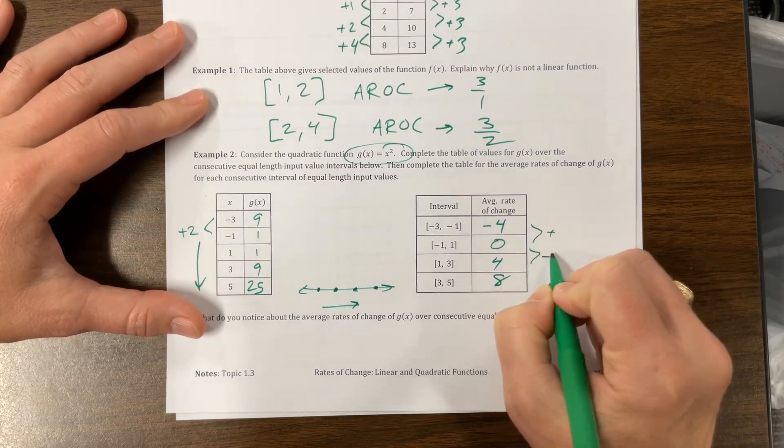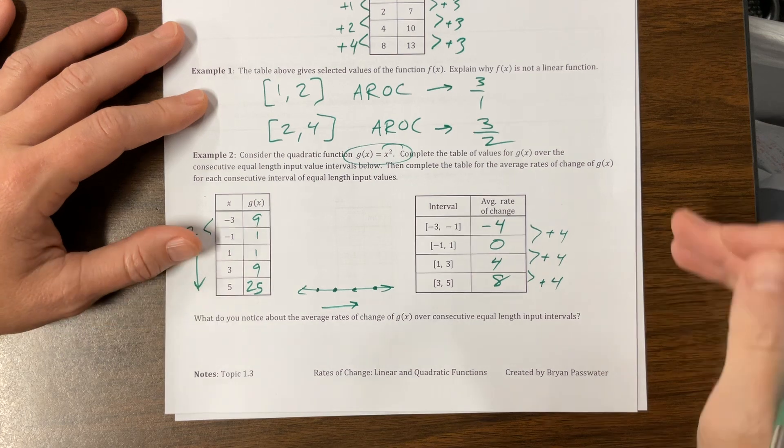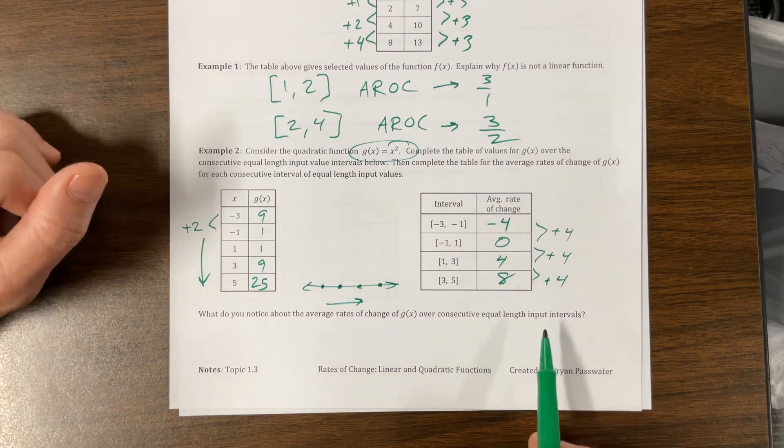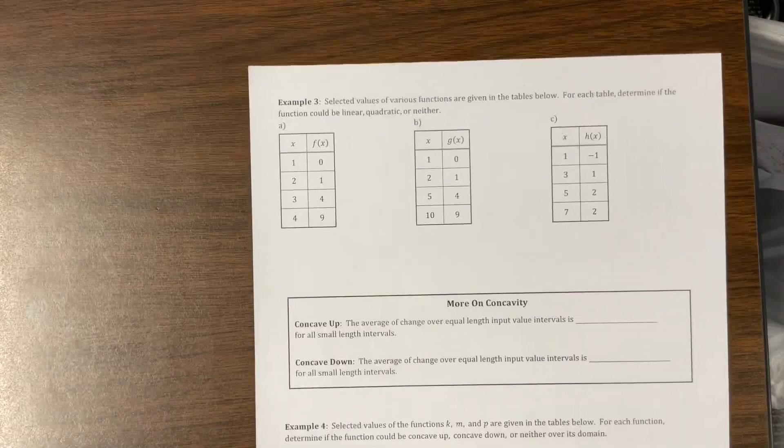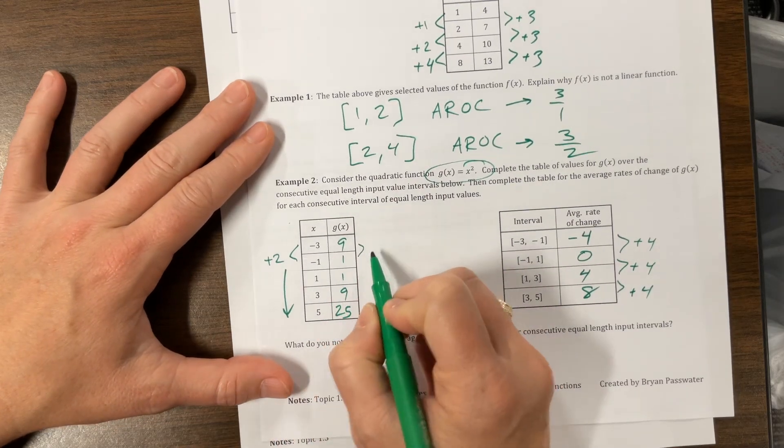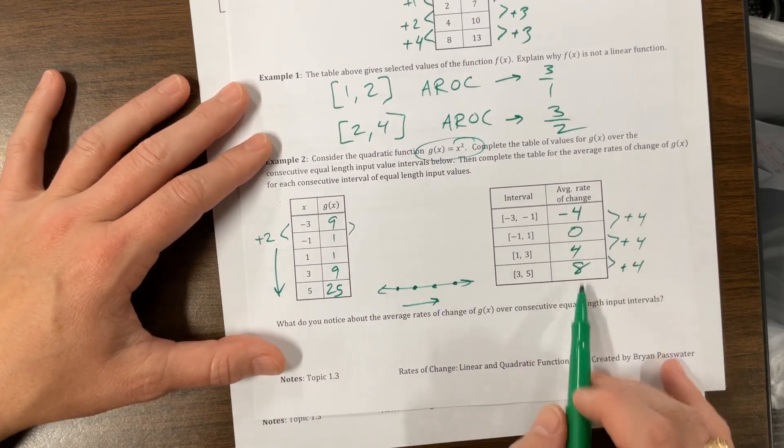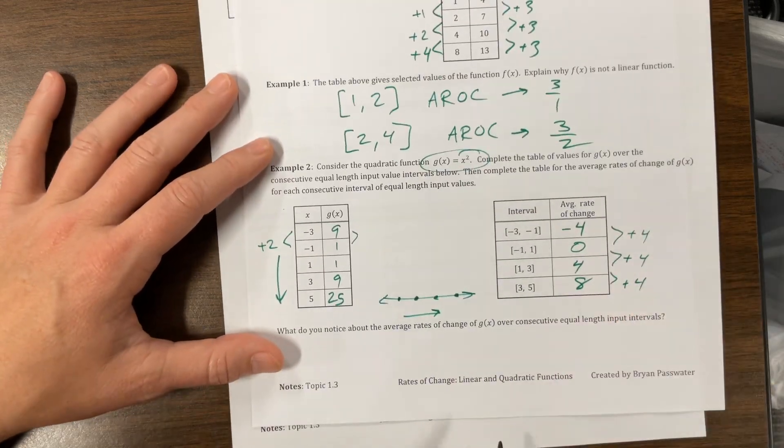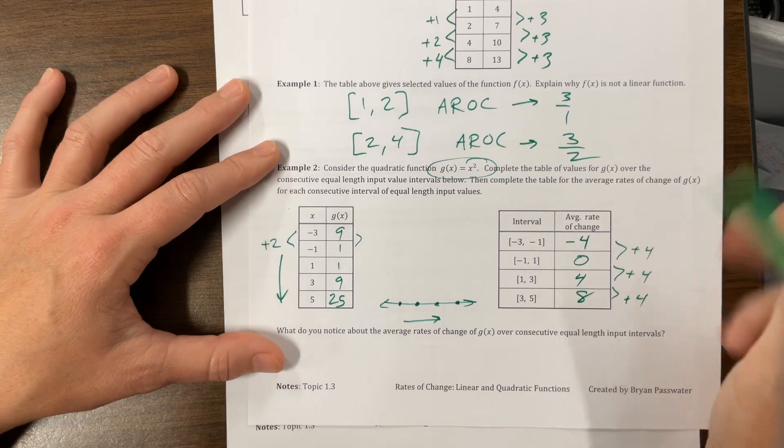Notice on here, they are changing by the same amount. So if the average rate of change is changing at a constant rate, it's quadratic. We can also think of this as being like the second difference. This is the first difference, and this is sometimes the second difference. The second difference leads to something quadratic. But AP doesn't really talk about the first difference and the second difference. They talk about the average rate of change and the change of the average rate of change.